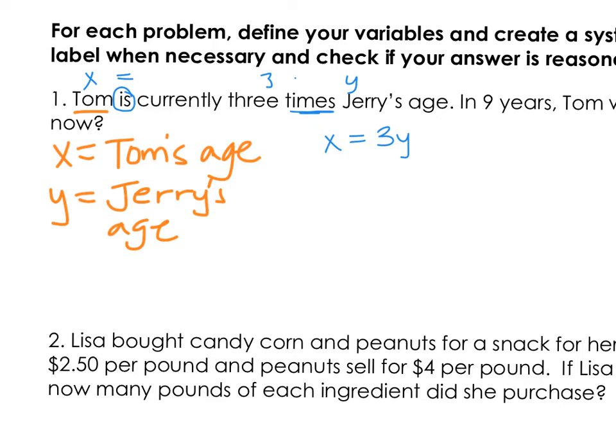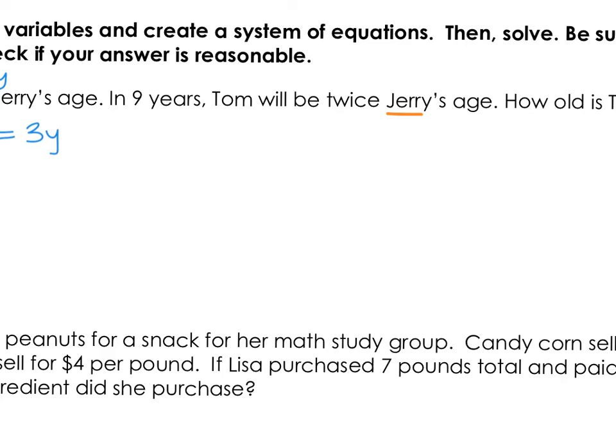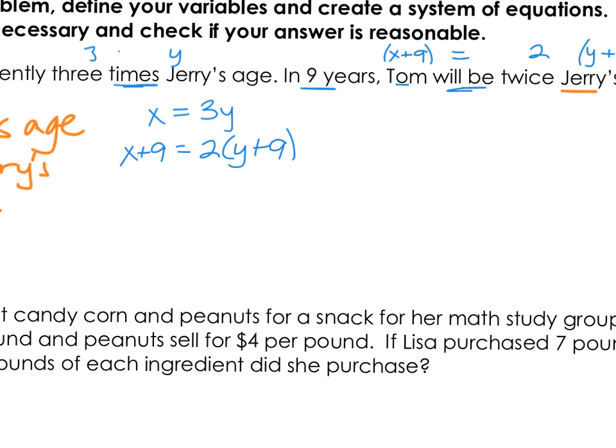The second part says in 9 years. What we have to recognize is that in 9 years, both Tom and Jerry are going to be 9 years older. So Tom is going to become x plus 9. Jerry will be y plus 9 in 9 years. The 'will be' is another indicator for equals. It says twice Jerry's age, which means Tom will be twice what Jerry's age is in 9 years. This creates our second equation: x plus 9 is twice y plus 9.